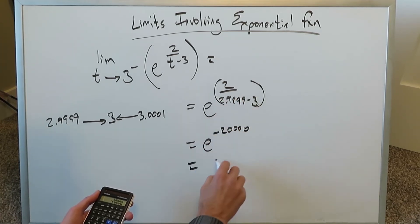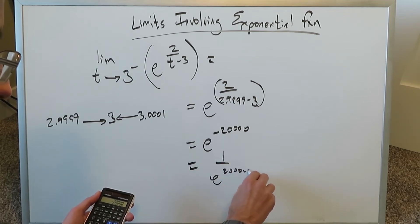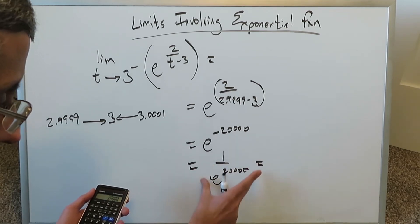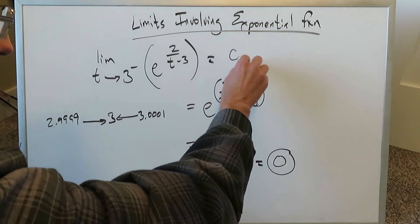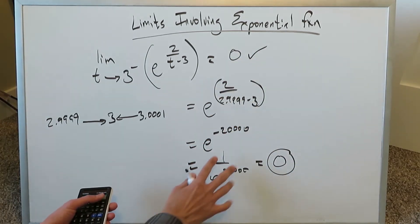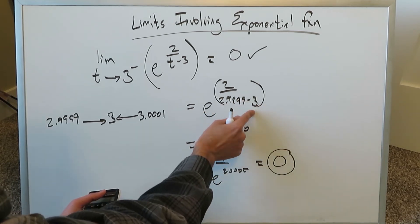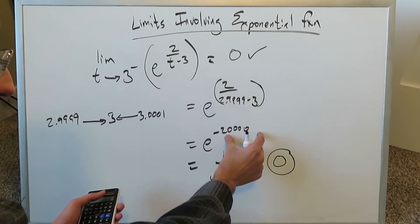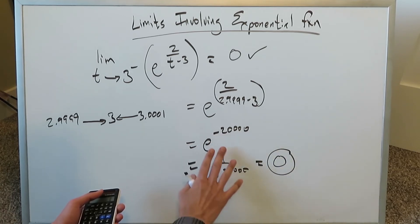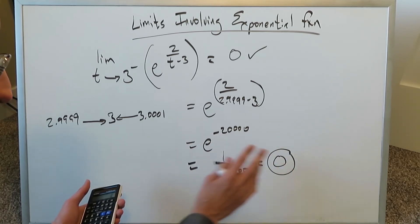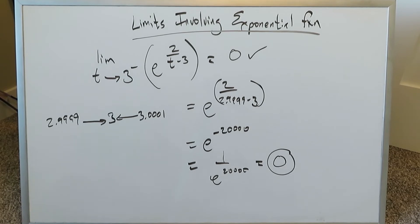What we end up getting is e to the power of minus 20,000, which is no different than 1 over e to the power of 20,000. You're doing 1 divided by an increasingly large number, which zeros it out. The more 9s you put closer to 3, the larger the negative exponent becomes, and 1 divided by that always zeros out. So the answer to this limit is 0.